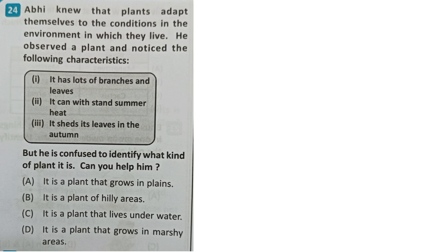Next question: Abhi knew that plants adapt themselves to conditions in the environment in which they live. He observed a plant and noticed: it has lots of branches and leaves, it can withstand summer heat, it sheds its leaves in autumn. Can you help him identify the plant? Options: a plant that grows in the plains, a plant of hilly areas, a plant that lives under water, a plant that grows in the sea area. The correct answer is A - a plant that grows in the plains.